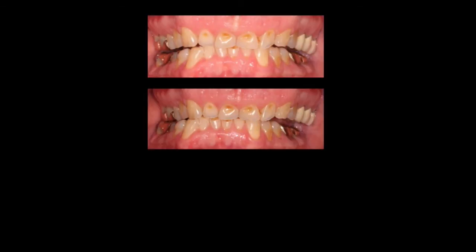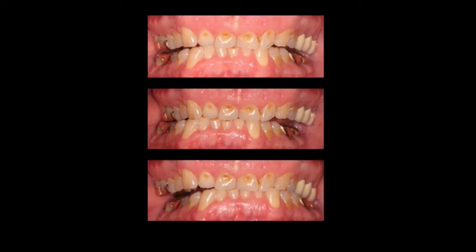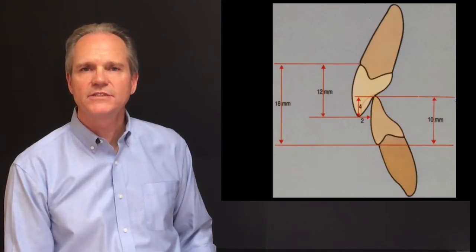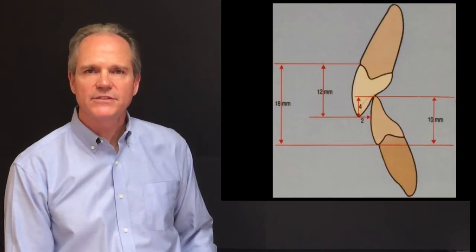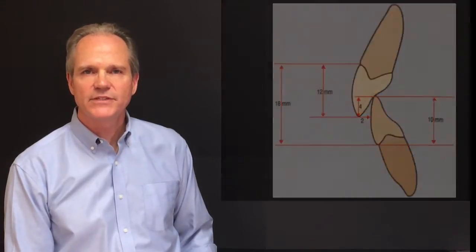Functionally, in protrusive, right, and left lateral, we see that he has inadequate anterior guidance. So we know the genetic tooth form of a maxillary central incisor — the length will be about 12 millimeters — and the mandibular incisor will be about 10 millimeters. And with proper overlap and overjet, the vertical dimension of occlusion is about 18 millimeters.